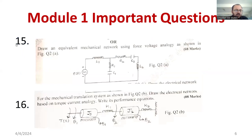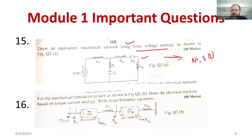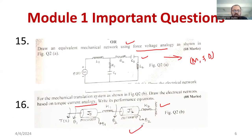Question 15: draw the equivalent mechanical network using force-voltage analogy for a given electrical circuit. You need to convert the electrical circuit into a mechanical diagram — a mass-spring-damper system. Then make the force-voltage analogy. There are two types of systems: translational system and rotational system. For the mechanical translation system, draw the electrical network based on the torque-current analogy. You may expect this kind of numerical example.